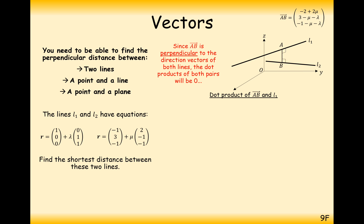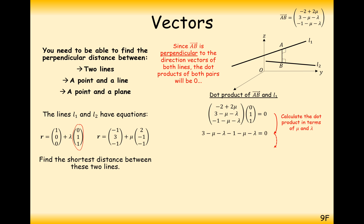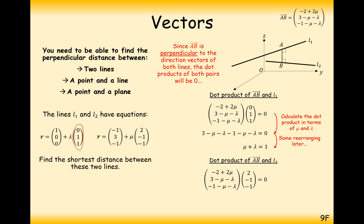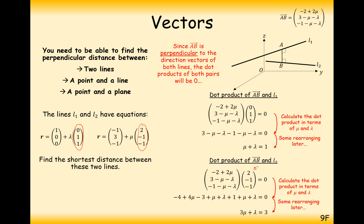Now we make sure that the vector from A to B meets line 1 at a right angle and line 2 at a right angle. Taking the dot product of A-to-B with the direction vector of L1, which is (0, 1, 1), and setting it equal to zero, we get λ + μ = 1. Then doing the same for line 2, expanding and simplifying, gives 3μ + λ = 3.